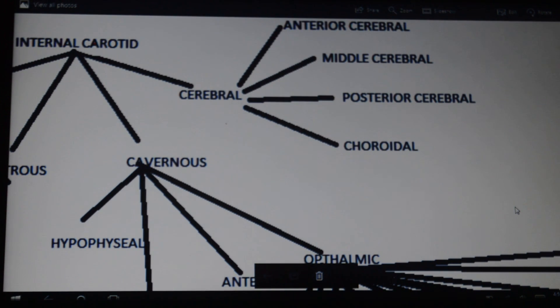Next comes the cerebral part, which is divided into four main branches: anterior cerebral, middle cerebral, posterior cerebral, and choroidal. The anterior supplies the anterior part, middle to the mid part, posterior to the back, and the choroidal artery.